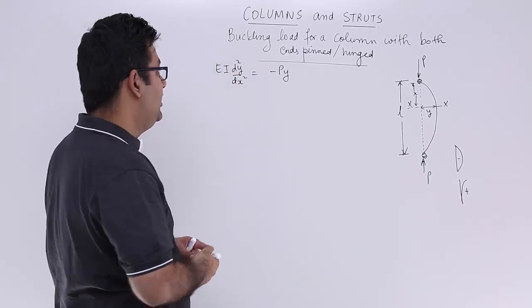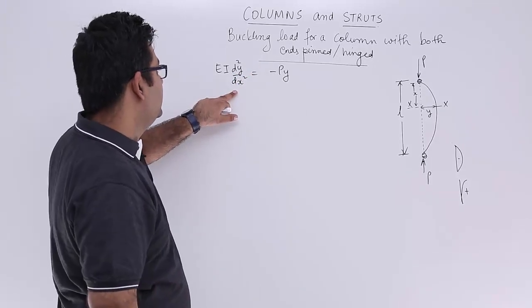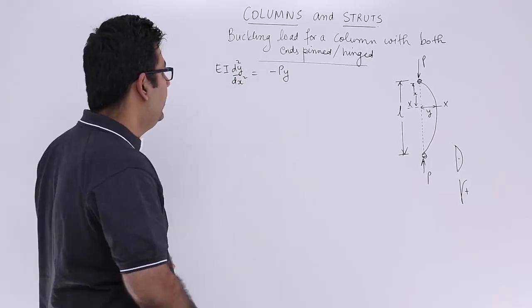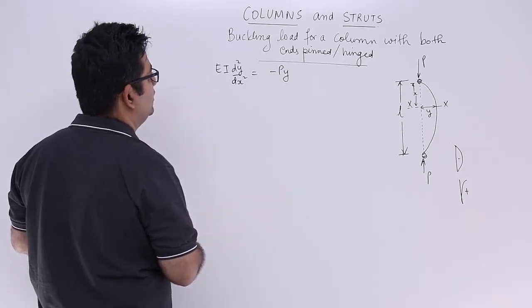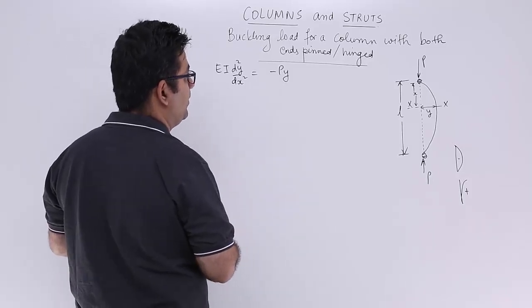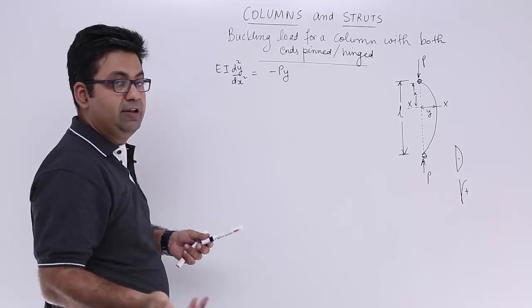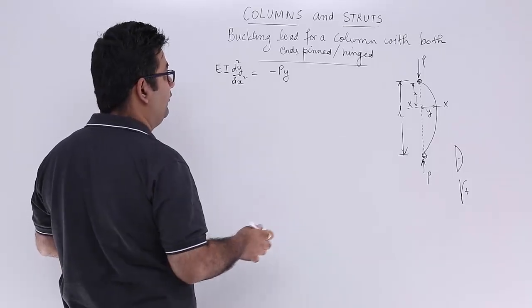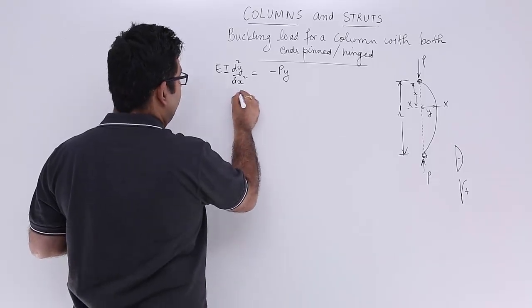So let's start integrating that, let's start solving the differential equation. You don't have to integrate it. You get y double dash is equal to minus P upon EI into y.